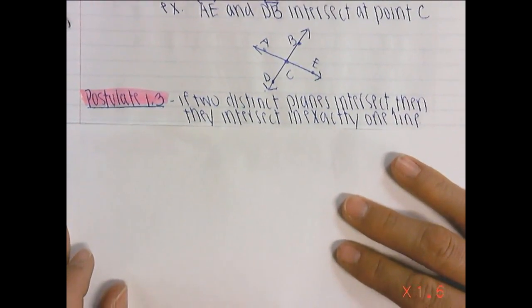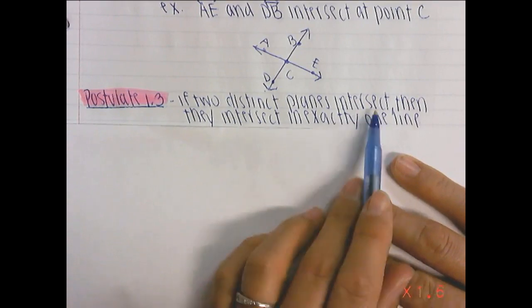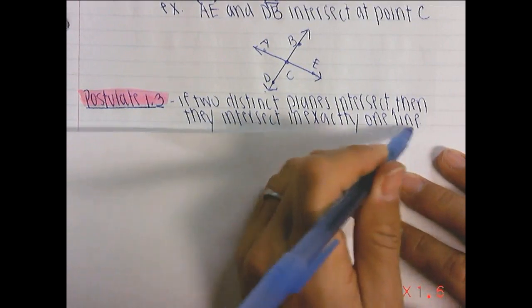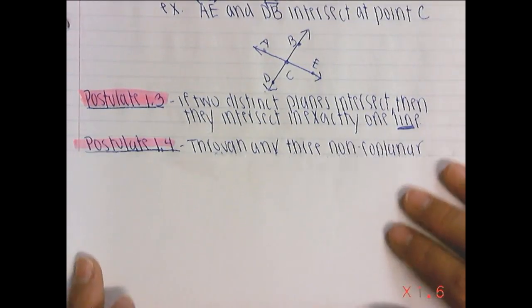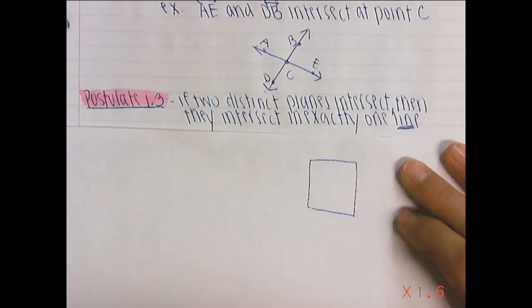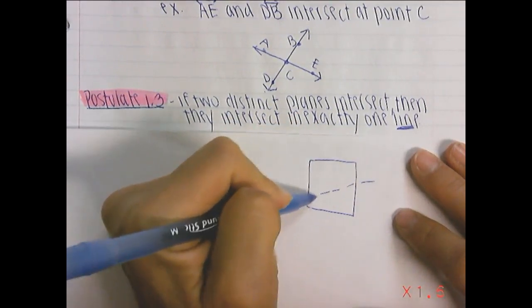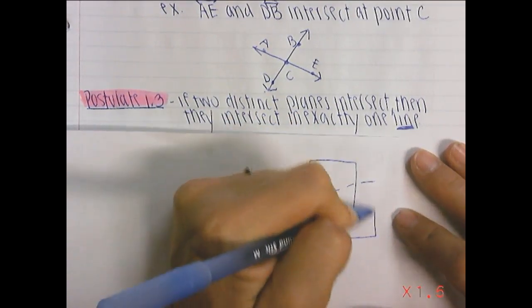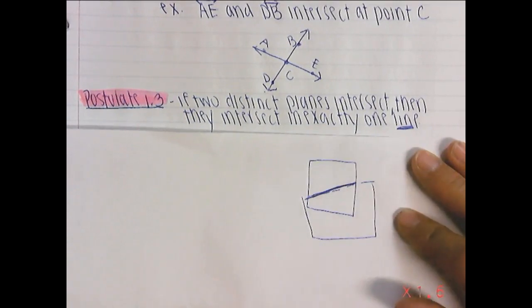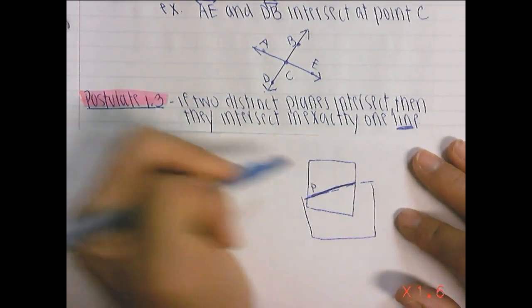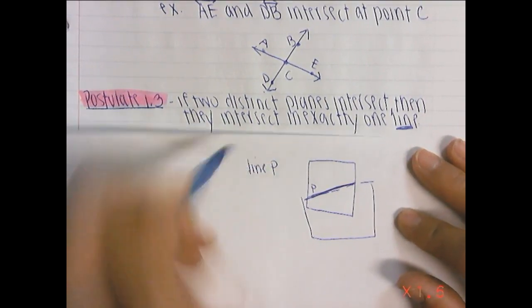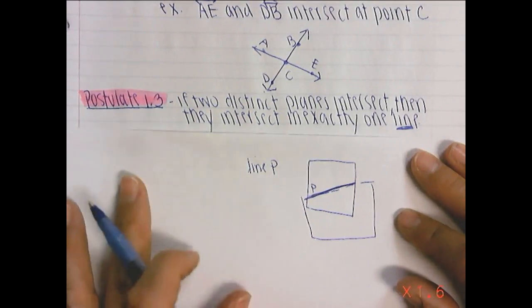Let's move along to postulate 1.3. If two distinct planes intersect, then they intersect at exactly one line. So instead of one point, it's one line this time. So if I were to draw you two planes, let's see if I could do this. There's one plane and through it goes another plane. Right here, where they're intersecting, this would be the line of intersection. Let me just label it with a little P. And we would say line P is where that forms. That's postulate 1.3.